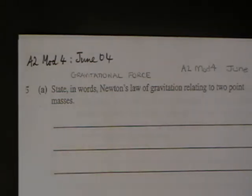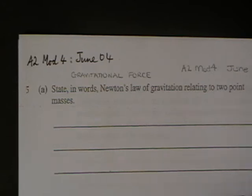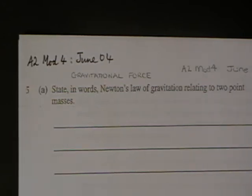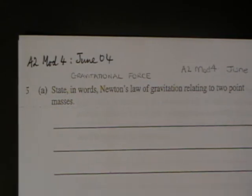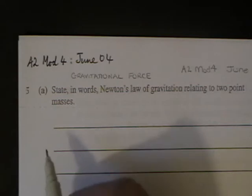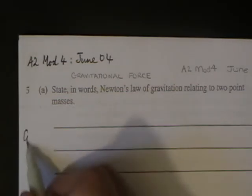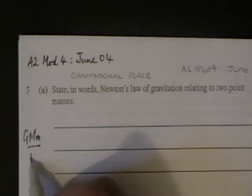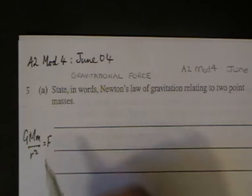First of all, state in words Newton's law of gravitation relating to two-point masses. Newton's law of gravitation is very straightforward. GMM over R squared is the way that we would normally remember it, but we have to state it in words here. If you remember that equation - GMM over R squared - that's what the force is.